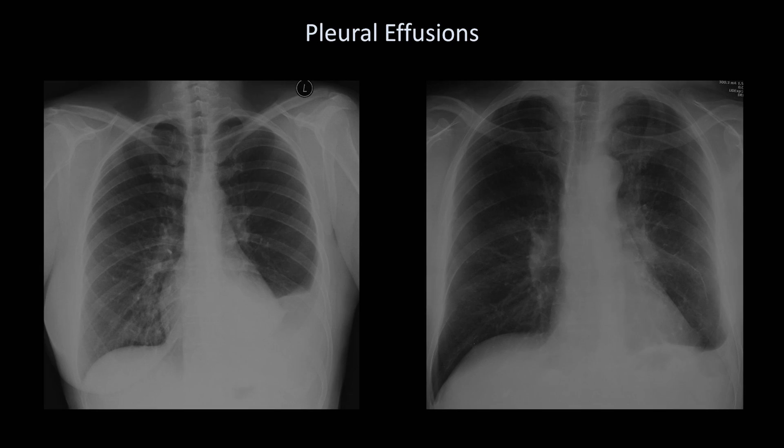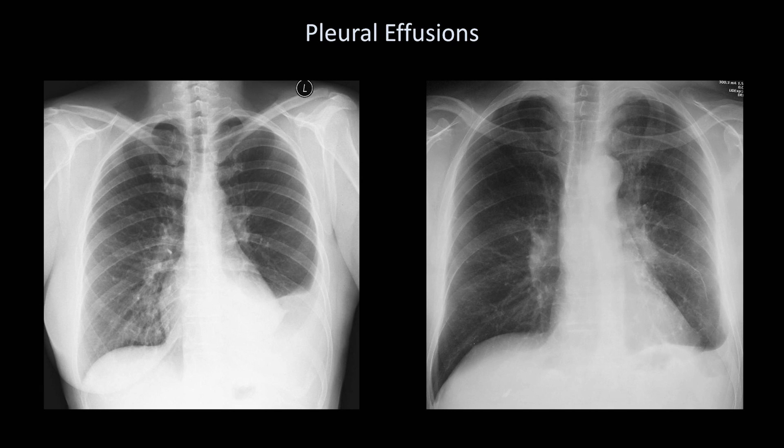Here are two examples of left pleural effusions. The effusion in the x-ray on the left of the screen is noticeable only from its blunting of the costophrenic angle. Because of capillary action of the fluid, the effusion often tracks slightly upwards along the pleural surface.